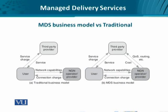Consequently, the managed delivery service environment with its new business dimension is comparable to the traditional business model in some interesting ways. In both scenarios A and B, we have three entities: the user, the third party, and the NGN operator. In the traditional business model, a user uses a service and pays service charges to the third party, while maintaining an explicit contract or service level agreement with the NGN operator by subscribing to network capabilities and paying connection charges. This scenario has no relationship between the third party and the NGN operator.